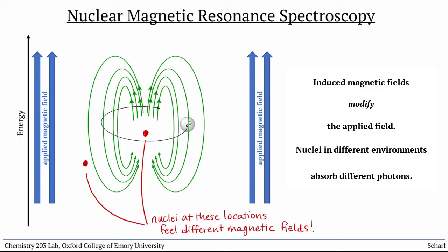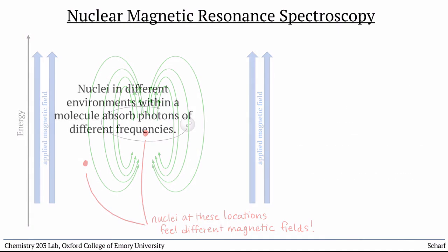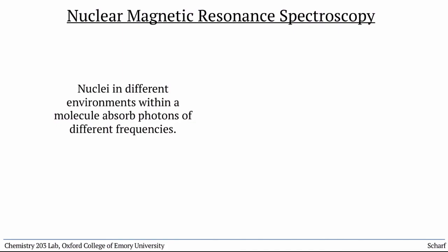This allows us to observe different absorption frequencies for different electronic environments within a particular molecule. So a nucleus that's near three fluorine atoms, which pull electron density away by their electronegativity, will absorb different photons than a nucleus farther from those fluorines. Even the most subtle of differences in electronic environment can have an effect. This is the basis of NMR spectroscopy, that nuclei in different environments within a molecule absorb photons of different frequencies.